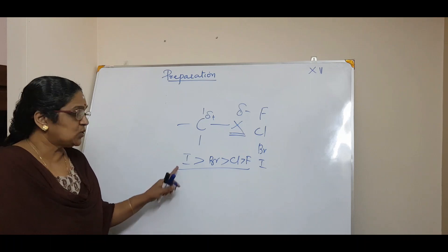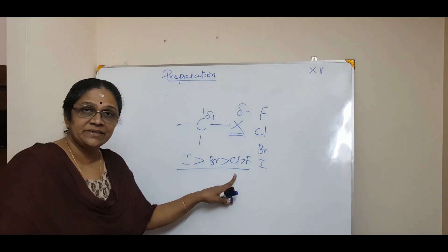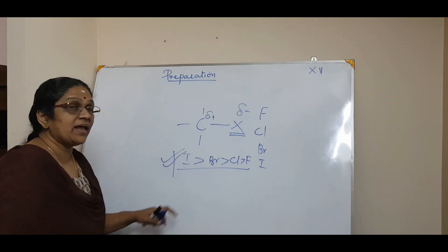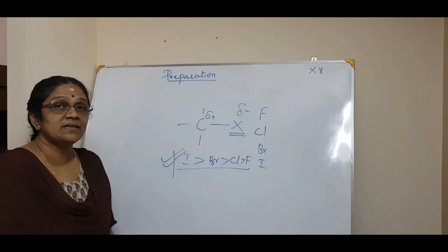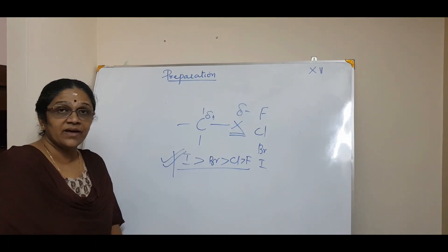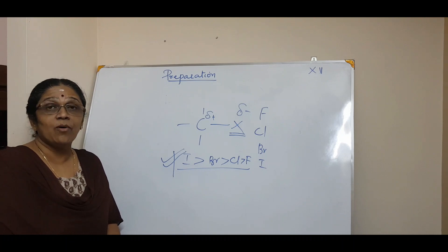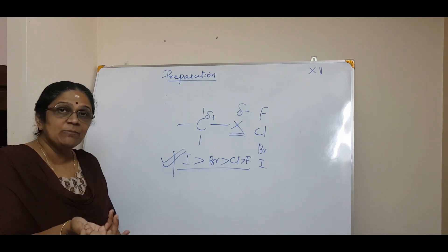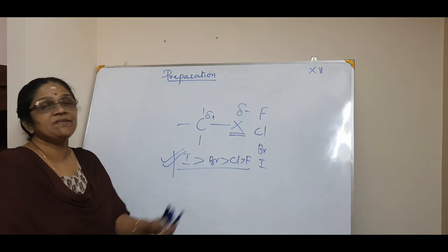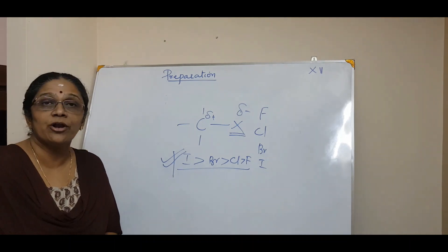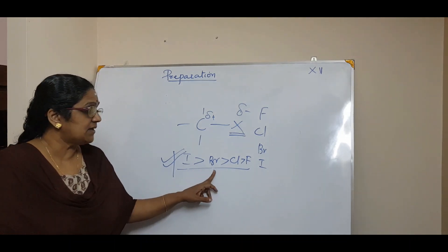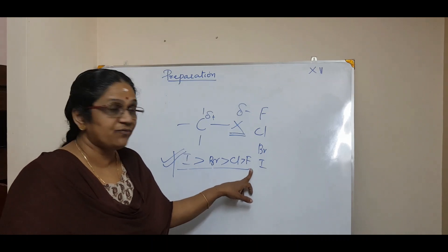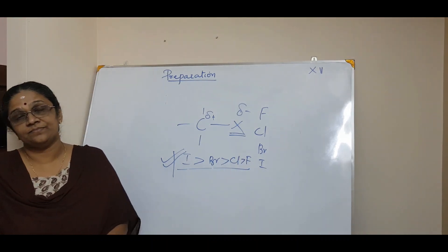The order of reactivity is: iodine > bromine > chlorine > fluorine. This is important. Since iodine has the largest size, the bond length is greatest, breaking is easiest, and therefore reactivity is highest for iodine.